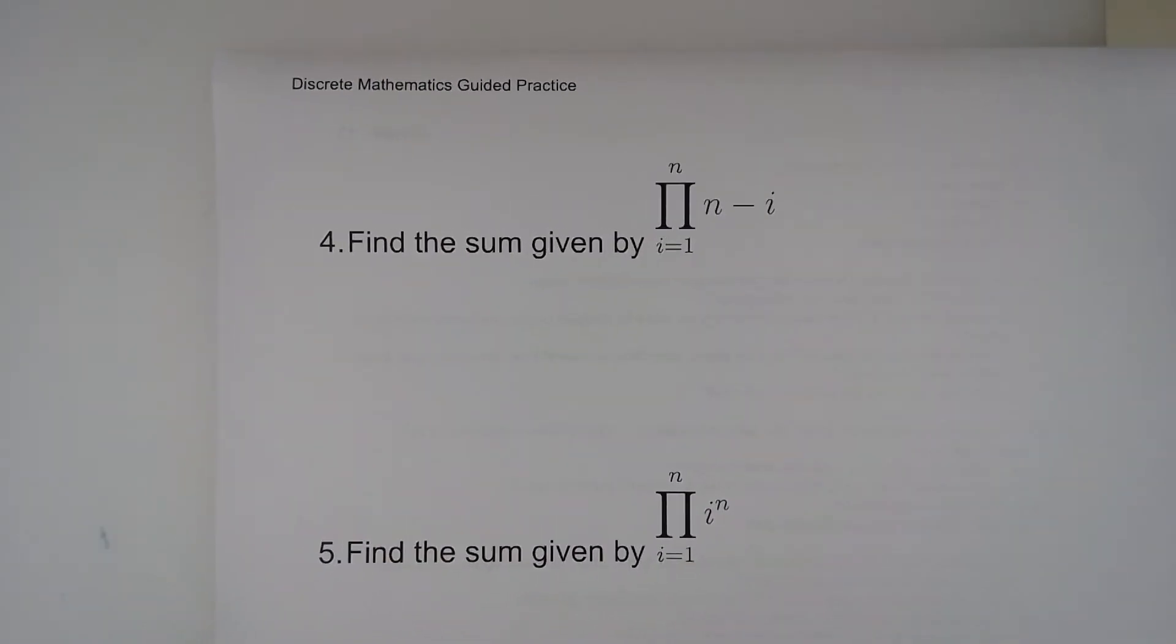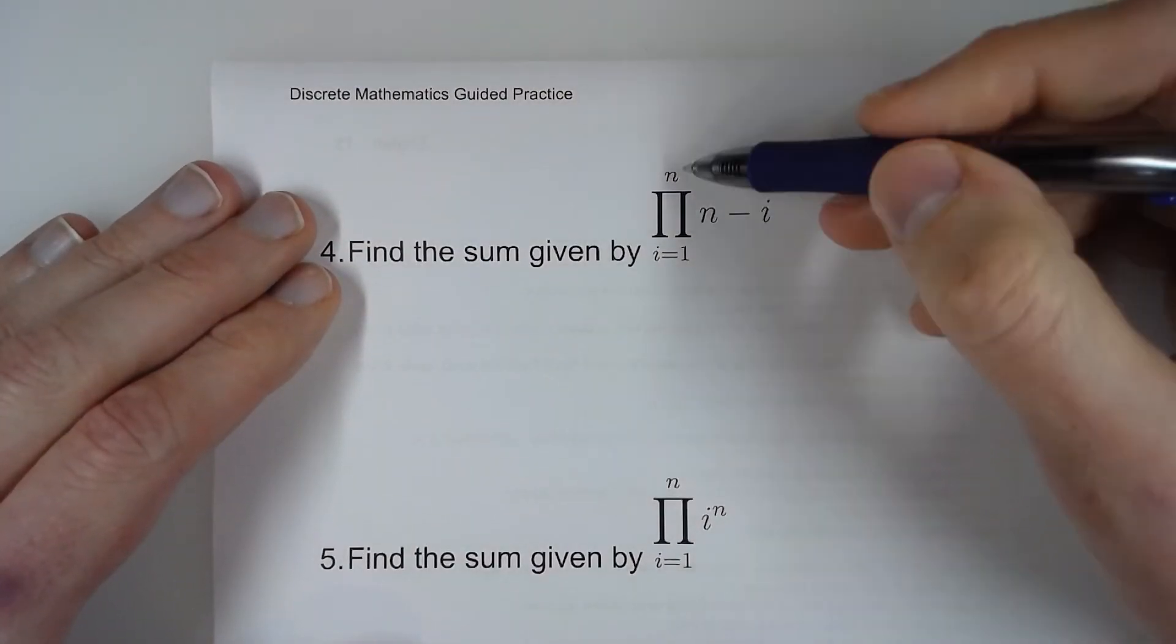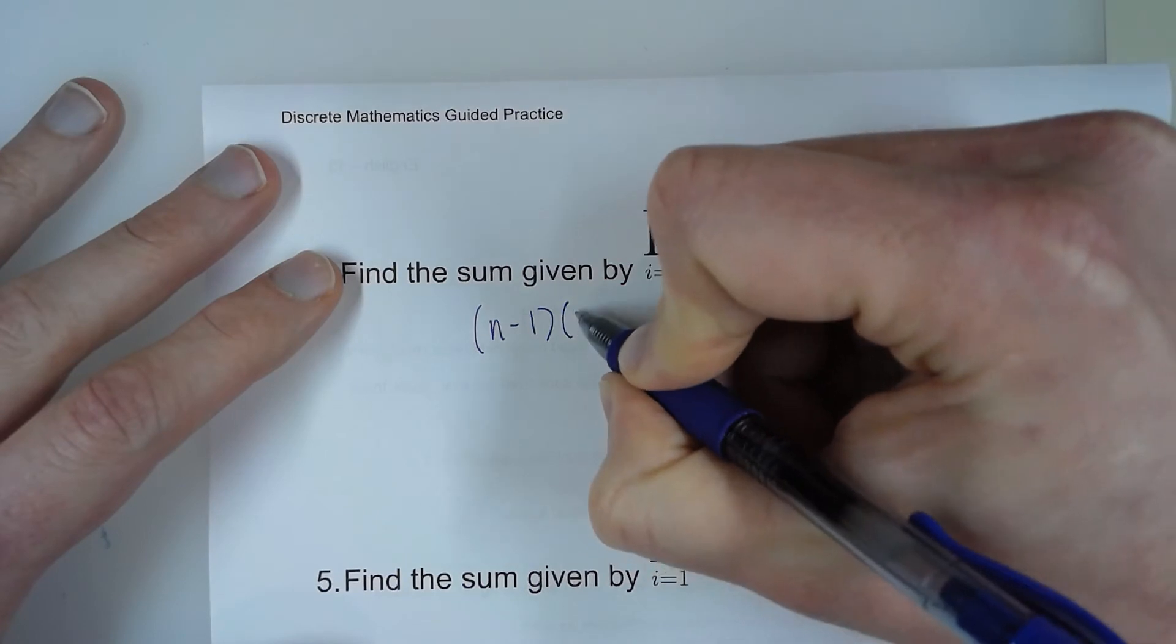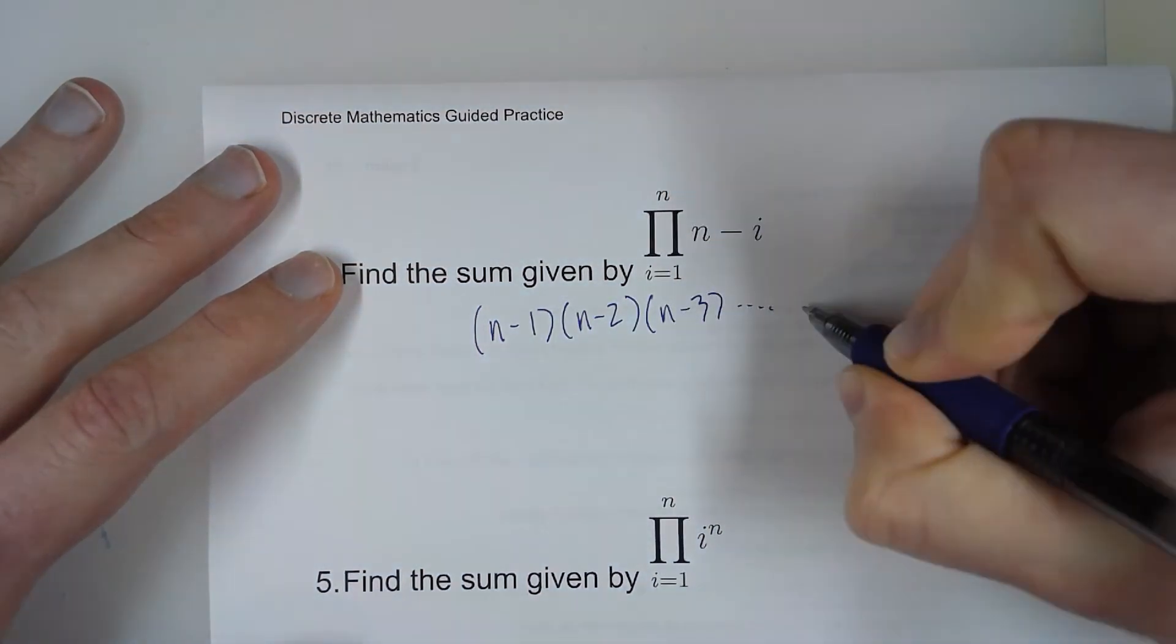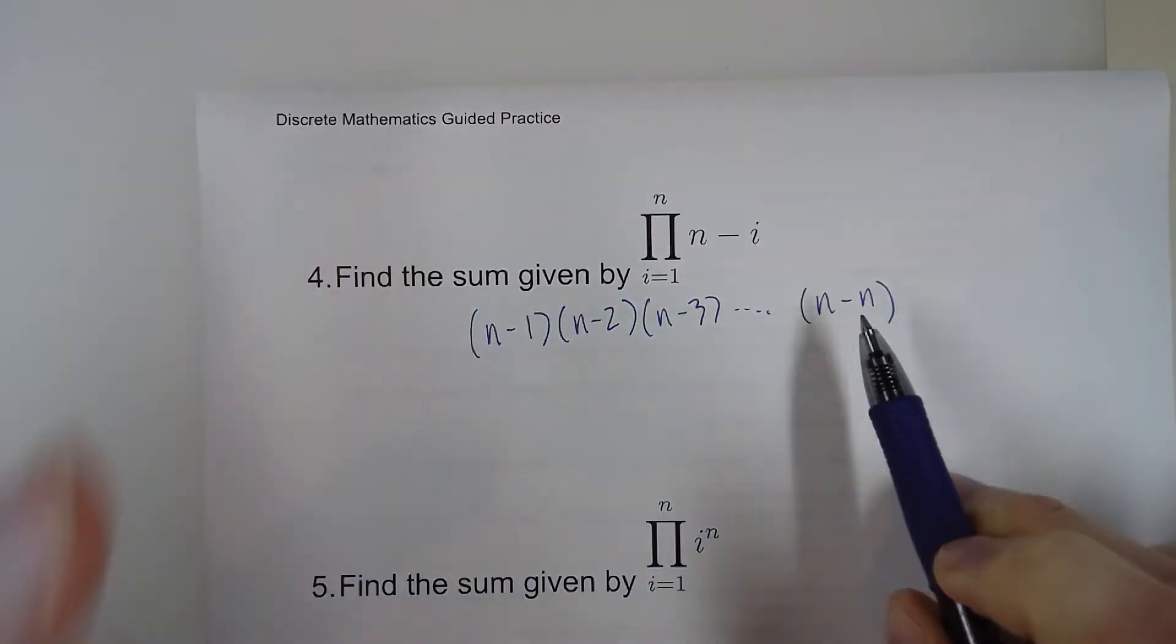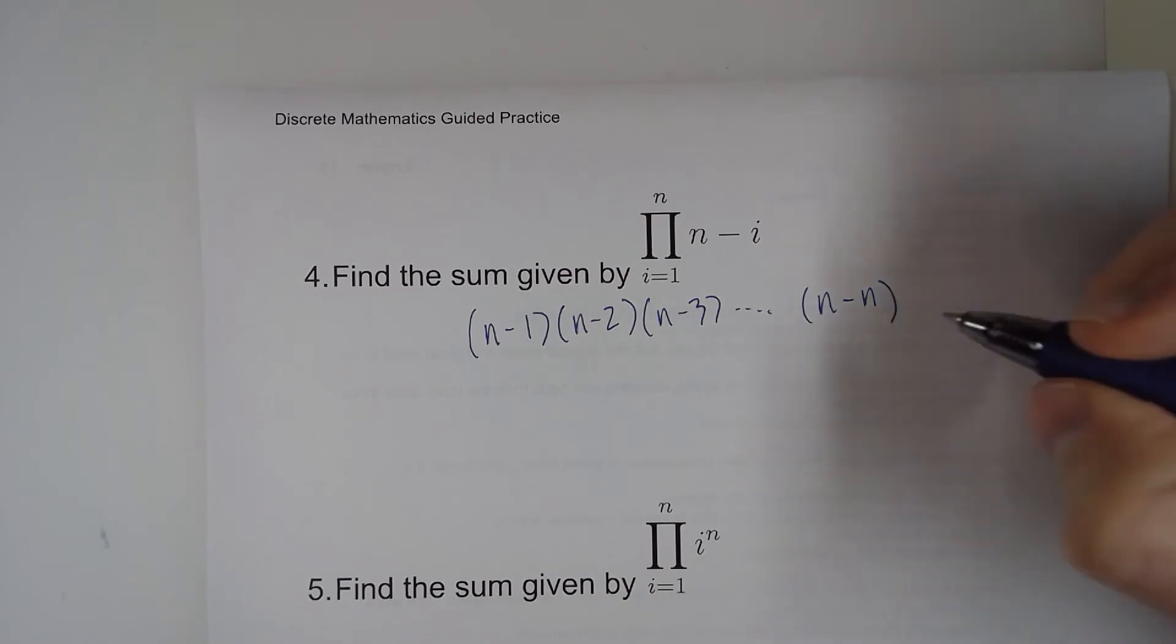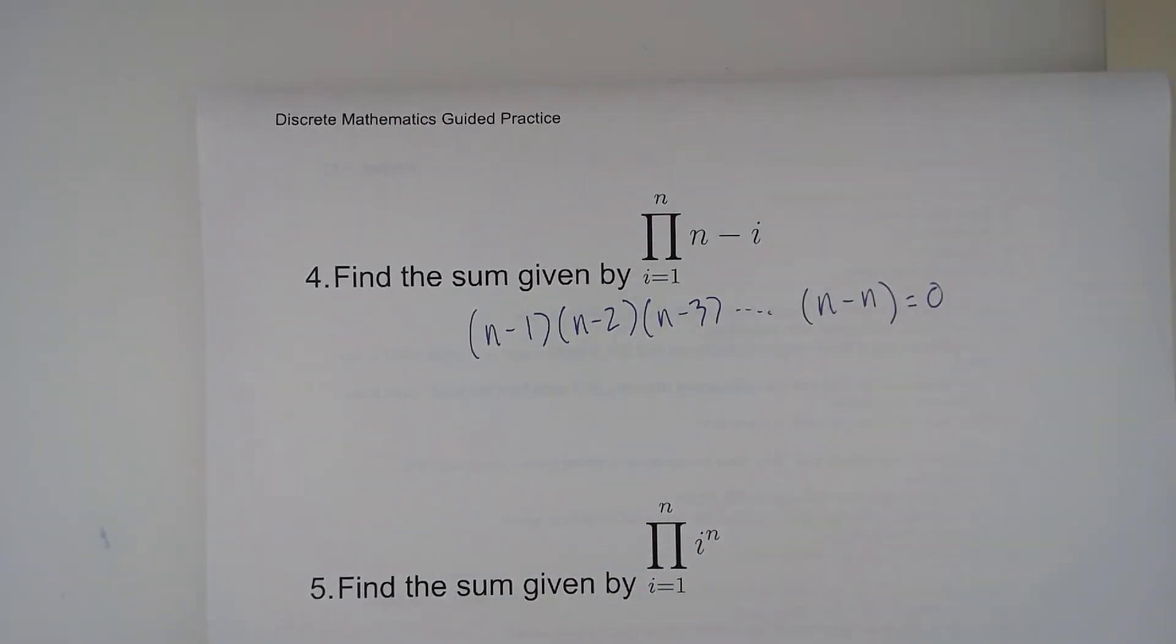Number 4. Here we're plugging in numbers for i starting at 1 and going to n. So I start with n minus 1 times n minus 2 times n minus 3. And we're going to keep going until we have n minus n. Now wait a minute. n minus n is 0. And 0 times anything is going to be 0. So it doesn't matter how many terms there are. This is going to equal 0.